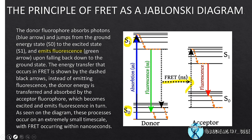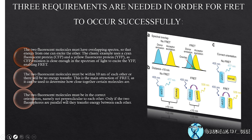Now we will see what three requirements are needed for FRET to occur successfully. First, the two fluorescent molecules must have overlapping spectra, so that energy from one can excite the other. The classical example uses cyan fluorescent protein (CFP) and yellow fluorescent protein (YFP), as CFP emission is close enough to the excitation spectrum of YFP, enabling FRET.